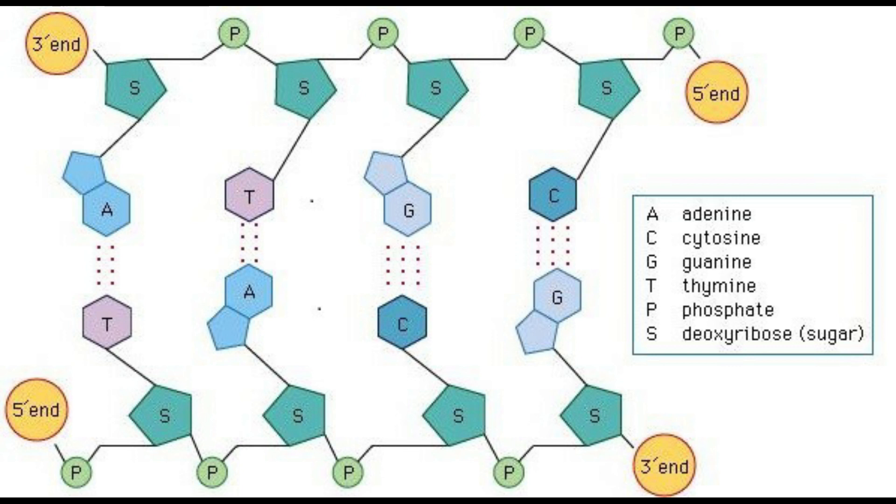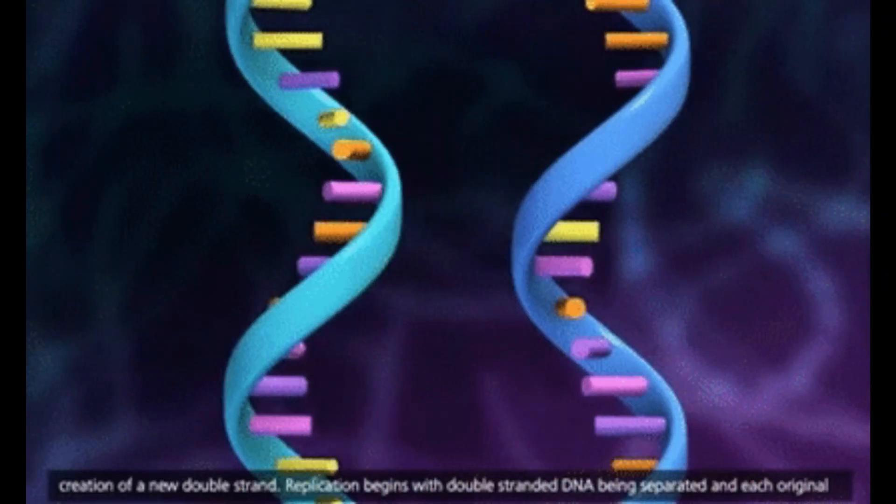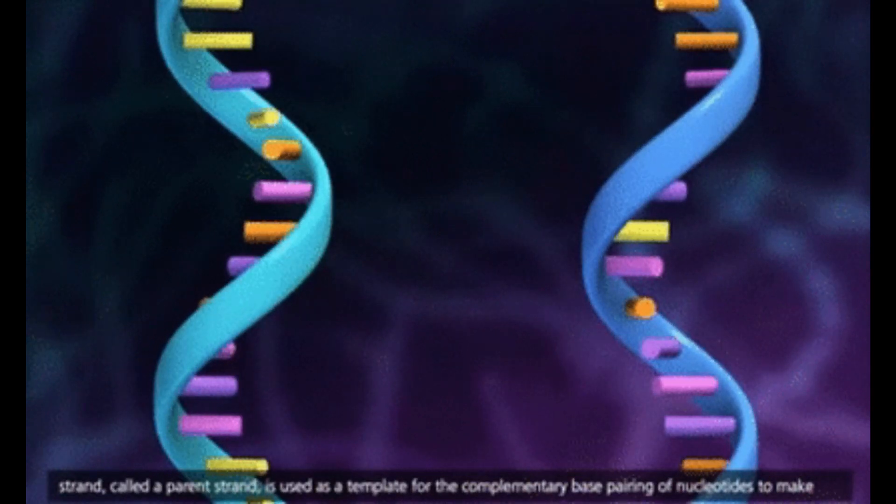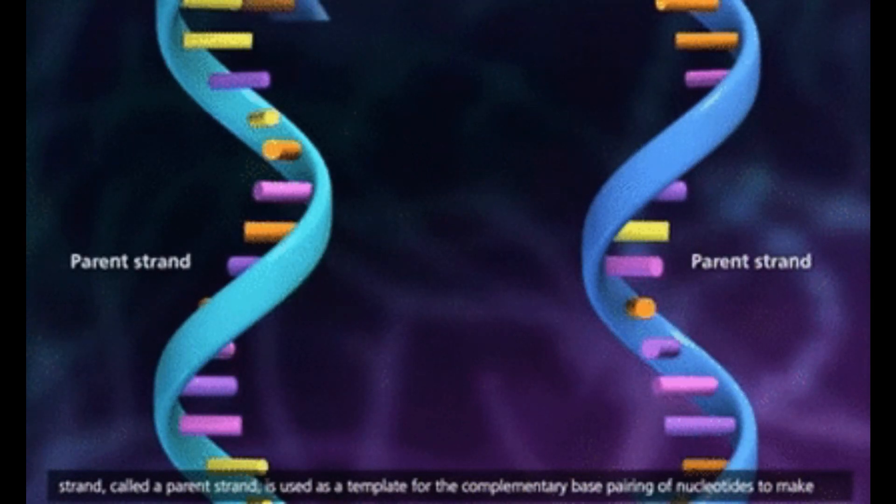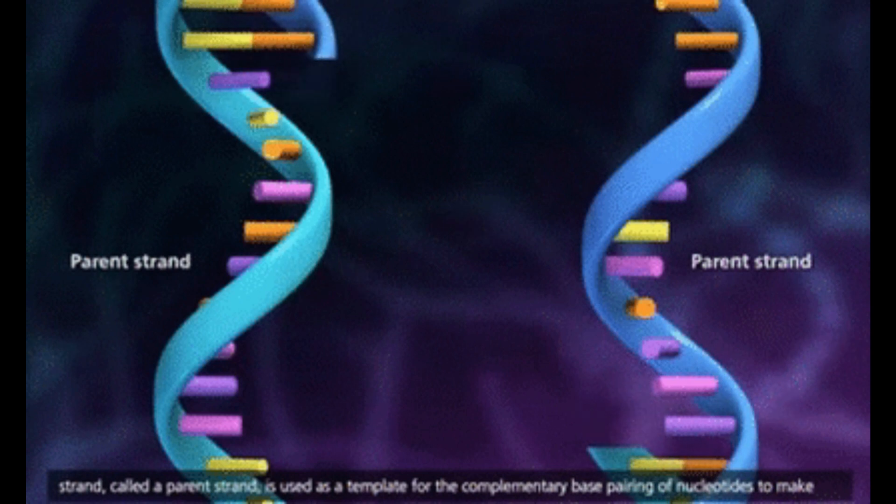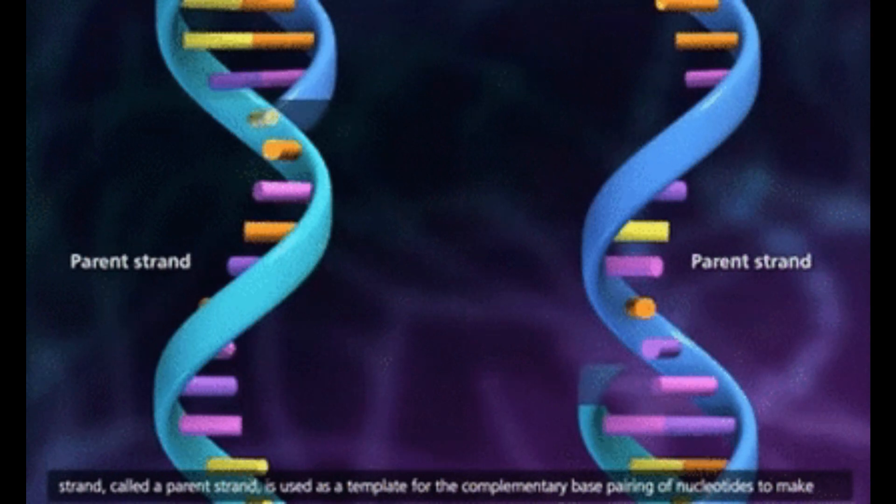This is what is meant by anti-parallel. The two strands run in opposite directions from each other. From this structure of DNA, biologists quickly realized that this was a perfect template for DNA replication. DNA replication follows a semi-conservative model,